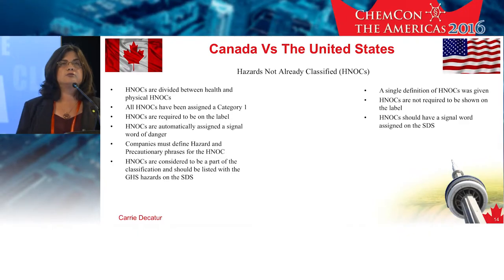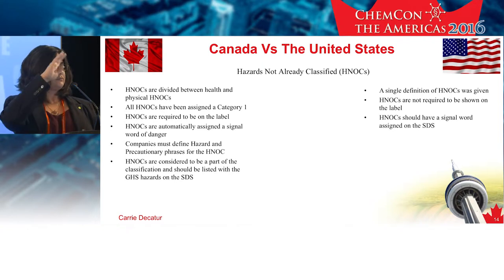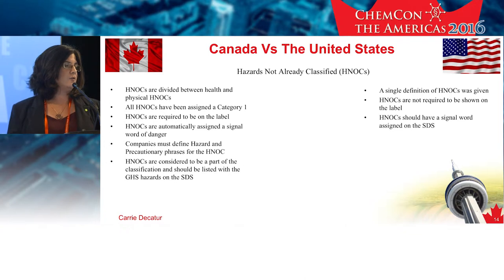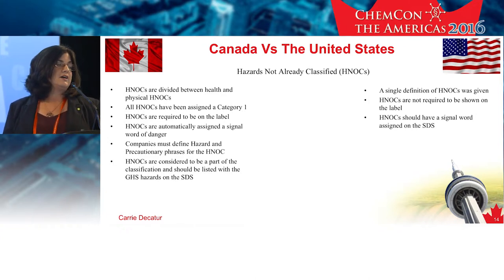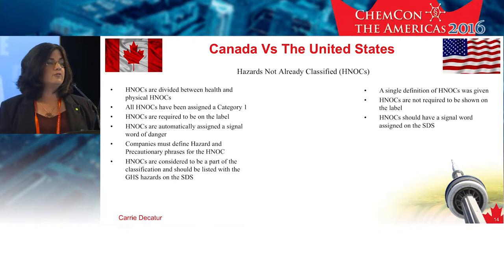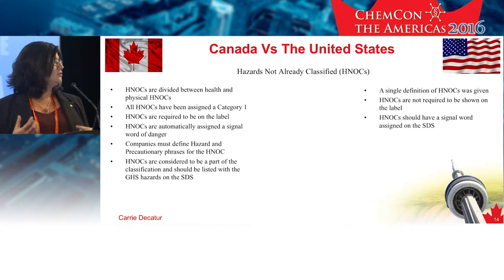Differences in HNOCs for Canada: they divided them up between health and physical, so you've got two buckets — not just one. They've all been assigned to category one, and they are required to be on the label. They've automatically been assigned a signal word of 'danger,' and companies must define the hazard and precautionary statements for that HNOC. They are considered to be part of the actual hazard classification and should be included with the rest of the GHS hazards on the SDS.